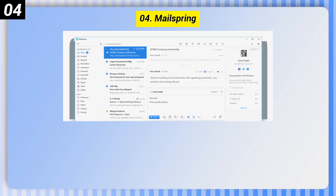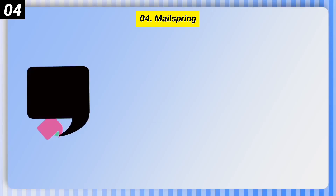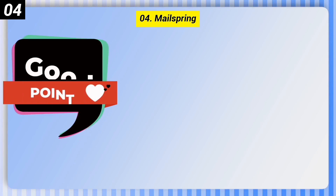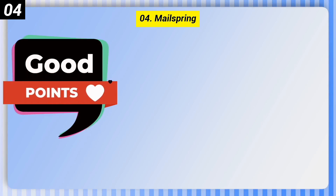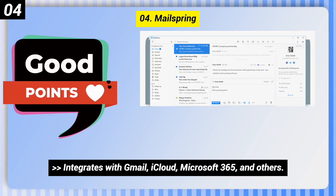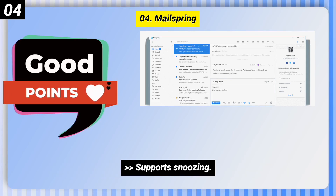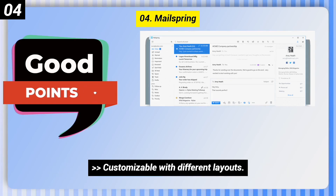Number 4: MailSpring. Here are some good points of this one. It integrates with Gmail, iCloud, Microsoft 365, and others. It also supports snoozing and is customizable with different layouts.